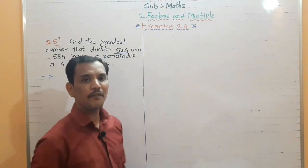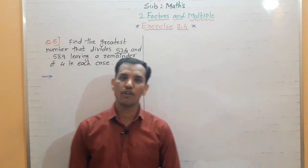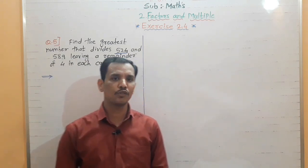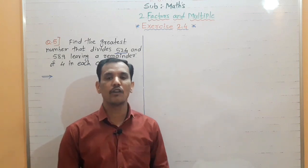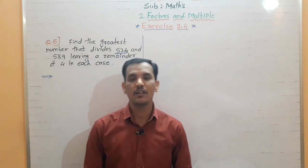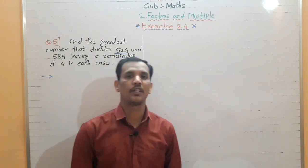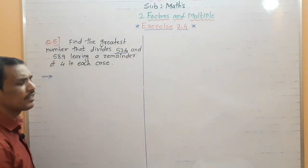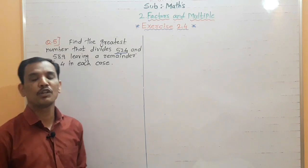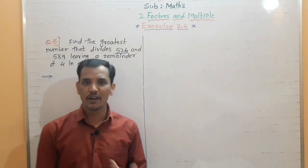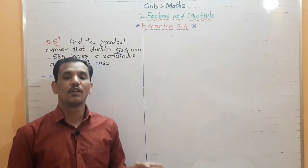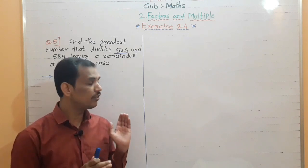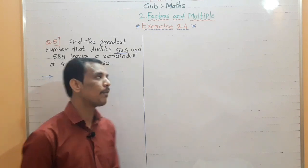In Exercise 2.4, question numbers one to four are simple questions where some numbers are given and you find their HCF using the prime factorization method, long division method, and the lowest term. Now we will solve the word problems from Exercise 2.4, because students are facing problems with how to solve word problems — the wording is very confusing.